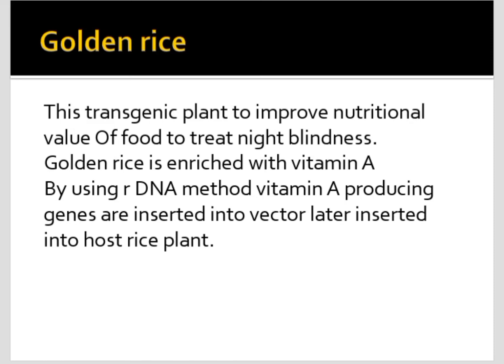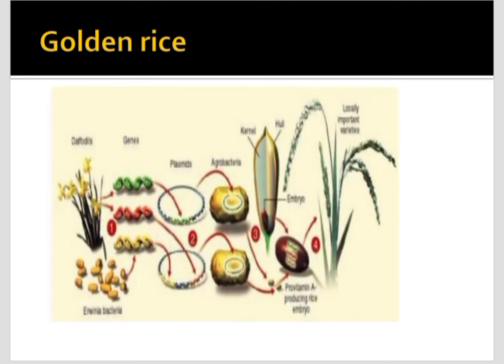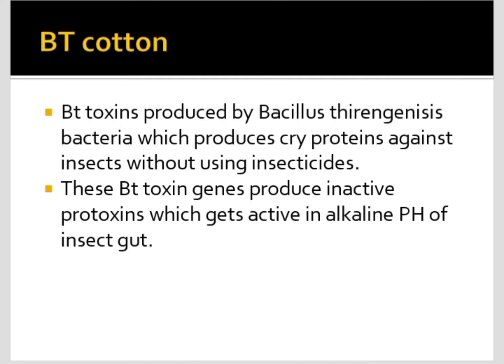Golden rice is rich in vitamin A. This transgenic plant is developed to improve the nutritional value of food and to treat night blindness, because it is enriched with vitamin A. Using the rDNA method, vitamin A-producing genes obtained from carrot or other sources are inserted into a vector — the plasmid — and later inserted into the host rice plant, which undergoes transcription and translation and produces vitamin A.